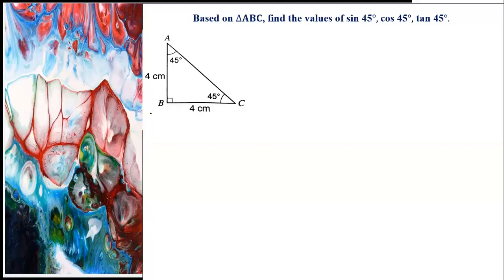Based on triangle ABC, find the values of sine 45 degrees, cosine 45 degrees, and tangent 45 degrees. First, compute the measurement of line AC.